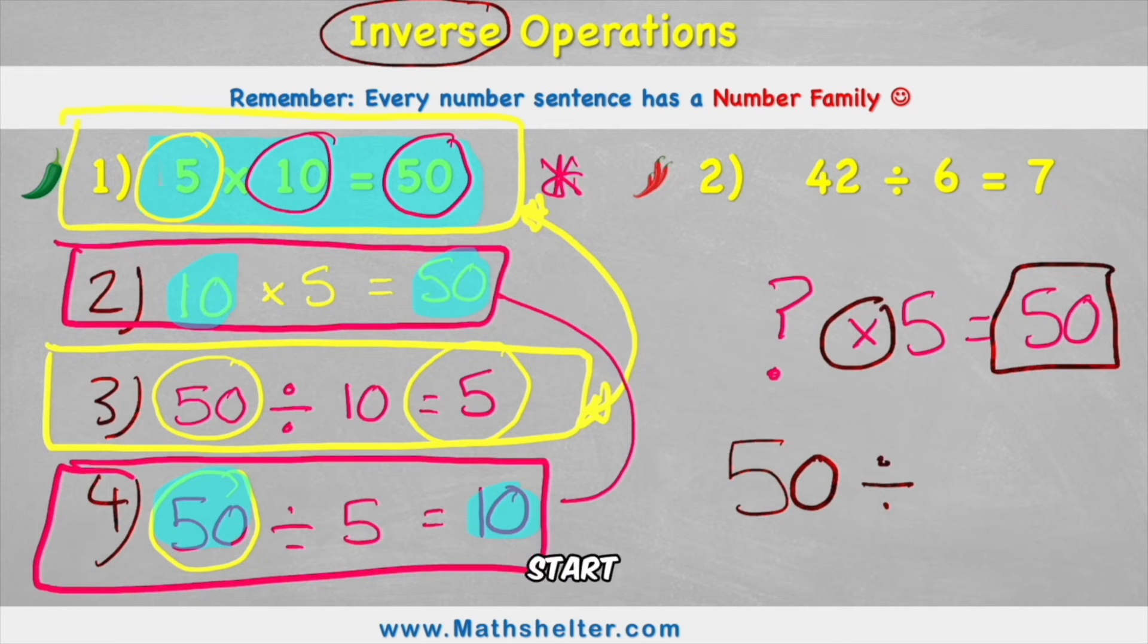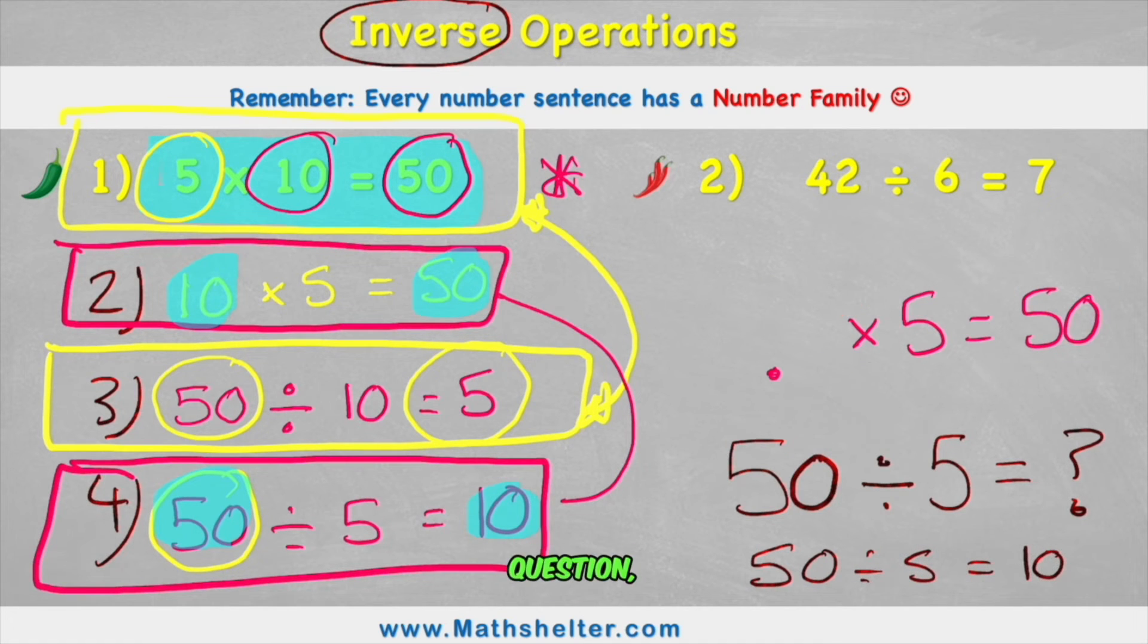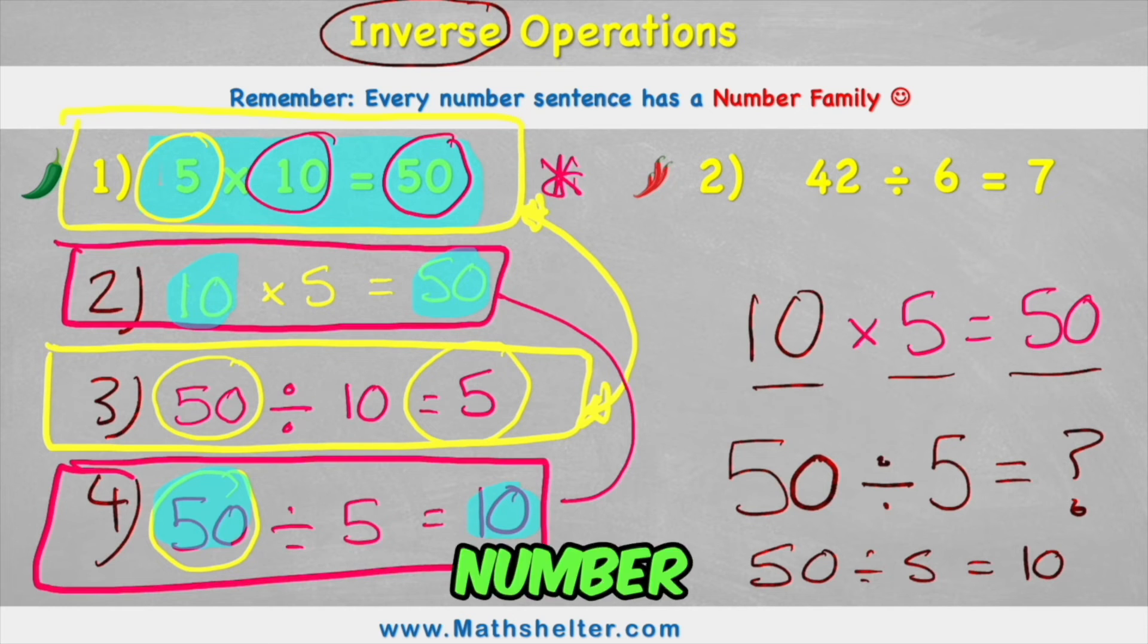So now that we have the 50 at the start, and we have the division, we can put my 5 in place. And now look, my question mark is where it should be at the end. And I can solve this and say 50 divided by 5 equals 10. So therefore, going back to the original question, this question mark must be 10. So 10 times 5 equals 50. So understanding number families and understanding inverse operations are very closely linked.